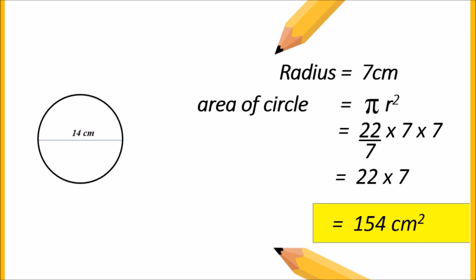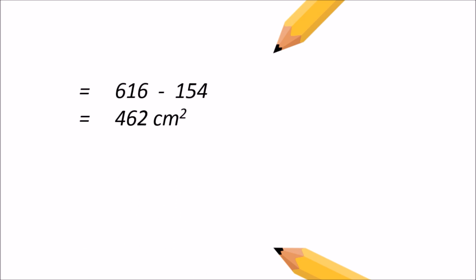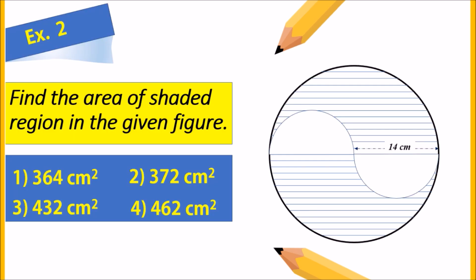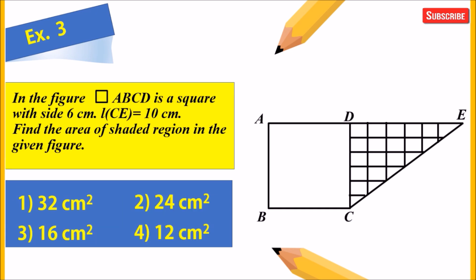Now we subtract 154 from 616, giving 462 centimeter square. Moving to the main question, the fourth option — 462 centimeter square — is the correct answer.